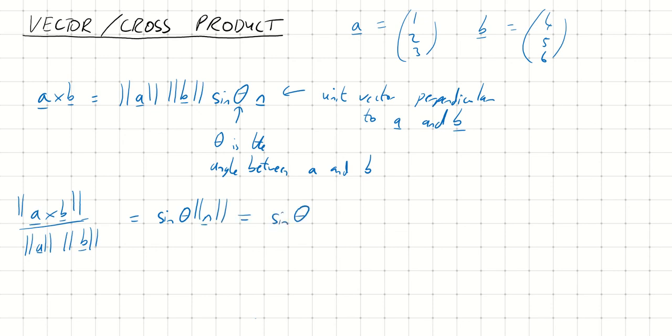So we get this useful formula that the magnitude of A cross B divided by the magnitude of A magnitude of B is actually equal to sine theta, where theta is the angle between A and B.